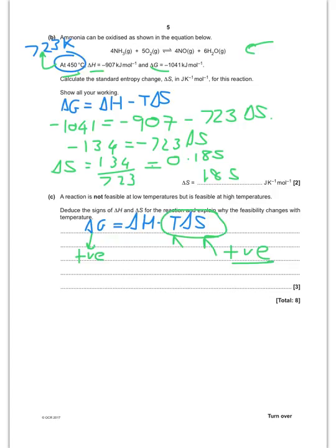And also, delta H must also be positive, because if this is small and positive, then we also want this one to be positive for delta G to be positive. But as this becomes bigger, minus T delta S will become more negative, and therefore, delta G will become negative at high temperature.